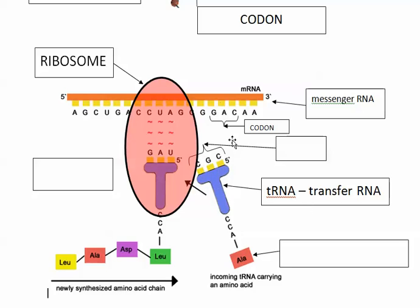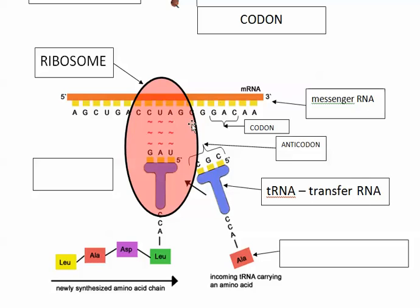The way this tRNA matches up is the codon on mRNA matches with an anticodon, and the anticodon is three letters complementary to the codon. This is just like base pairing in DNA but it's not DNA. C normally binds with G. A would normally bind with T in DNA, but there are no T's in RNA, so A binds with U, and U binds with A.